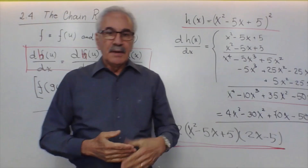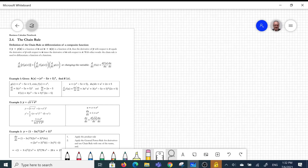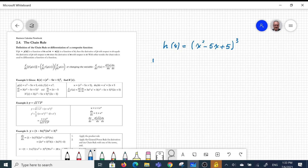Now let's see some examples on the tablet following the notebook directions. Example number 1: Find the derivative of the function h(x) = (x² - 5x + 5)³. We solved a similar example during the lecture, but that was squared. Now remember that we can consider u = x² - 5x + 5, in which case our h(x) can be written as u³.